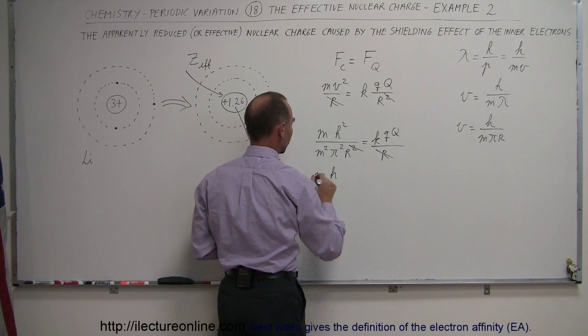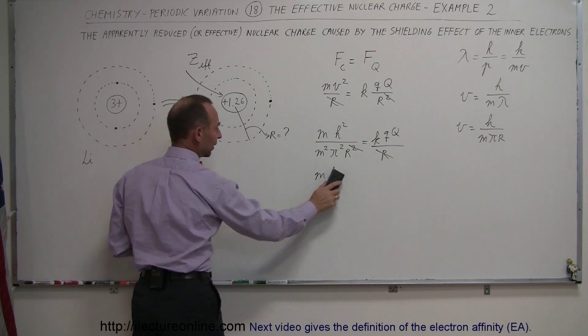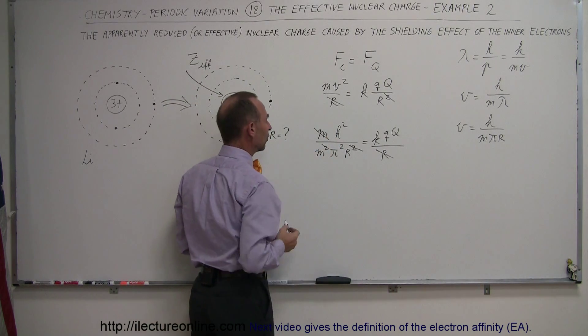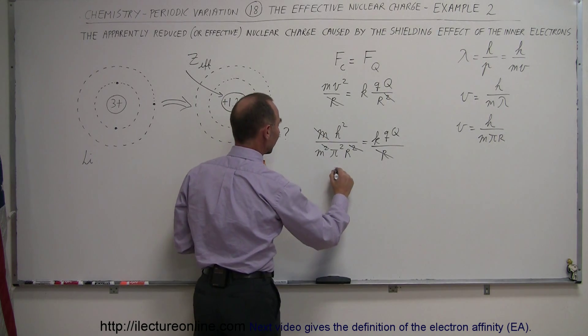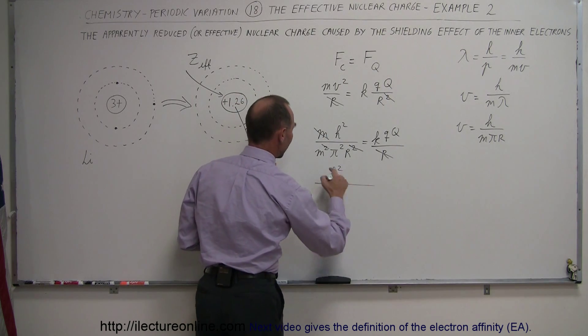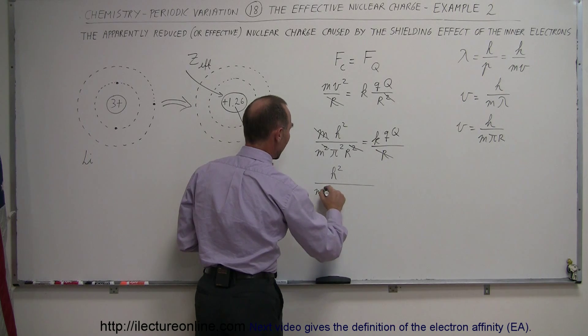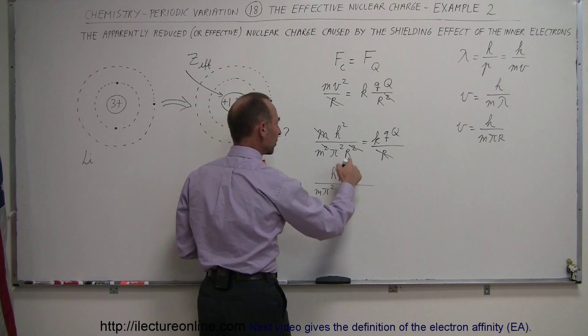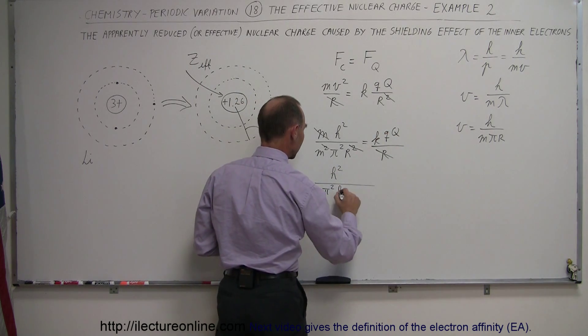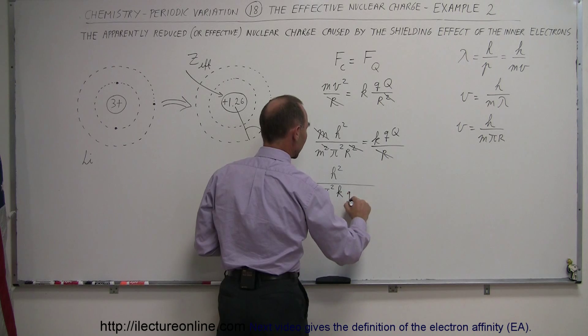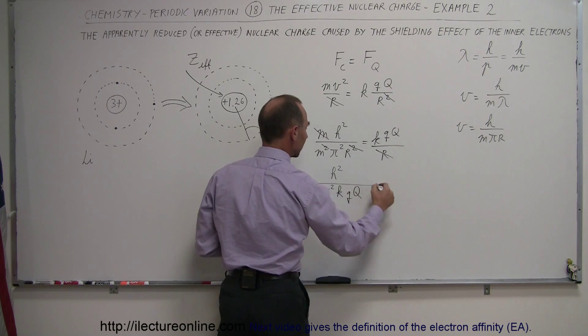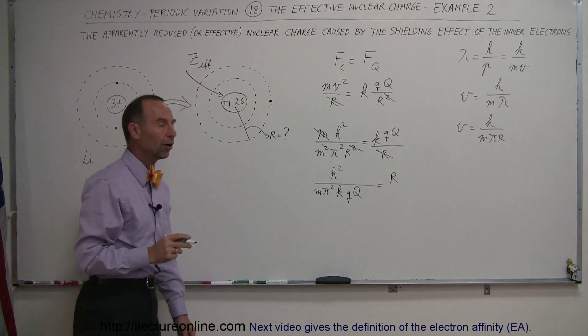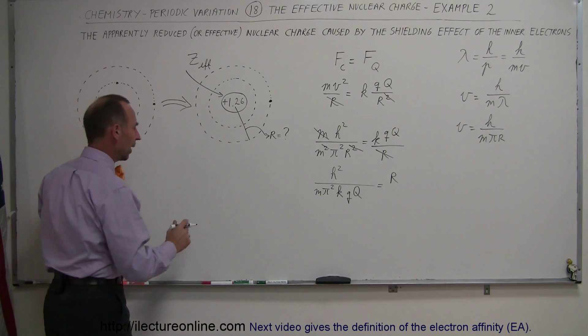So we have m h squared. One more thing, one more simplification. I see that I have an m in the numerator and I have an m squared in the denominator. So in the numerator I have h squared divided by one m, pi squared. This radius right here, I'm going to move it up there, so I have this k coming down here, this q coming down here, and the big Q coming down here equals r going up there. So now I have r isolated, and now I'm going to turn the equation around.